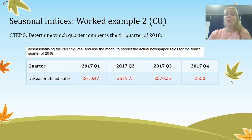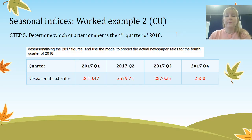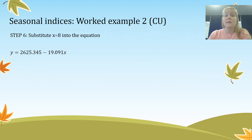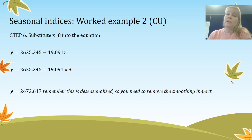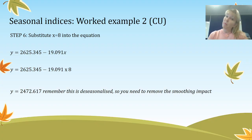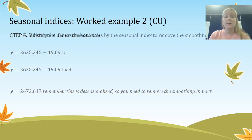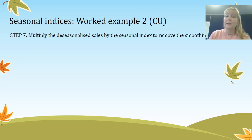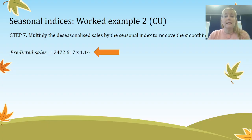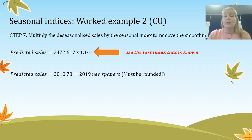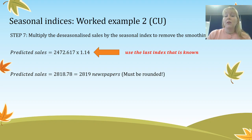The next step is to determine which quarter number corresponds to the fourth quarter of 2018. We have 2017 as four quarters, so four more on gives us the eighth quarter — X equals 8. Substituting into the equation gives Y = 2472.617. But remember this is de-seasonalised, so we need to re-seasonalise by multiplying by the seasonal index for quarter four, giving predicted sales of 2,818.78 newspapers. I must round that up since you can't sell part of a newspaper, so the answer is 2,819 newspapers.